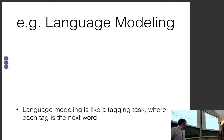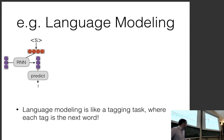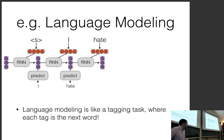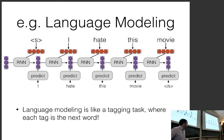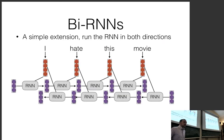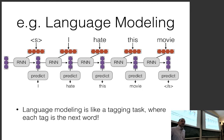Language modeling is like a tagging task where each tag is the next word. You input the start-of-sentence token, predict 'I', input 'I', predict 'hate', input 'hate', predict 'this', and so on. In feedforward language modeling we read in the previous two words to predict the next; in RNN language modeling, we input the previous word and the previous hidden state, calculate the new hidden state, and predict the next word.